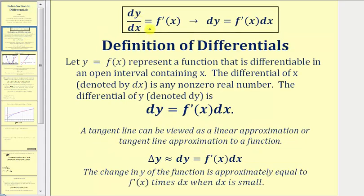We know that dy/dx is equal to f prime of x, where at a given value of x, this represents the slope of the tangent line. Therefore, differential y represents the change of y along the tangent line, and differential x represents the change of x along the tangent line. Solving for dy, we multiply both sides by dx, giving us dy equals f prime of x times dx.